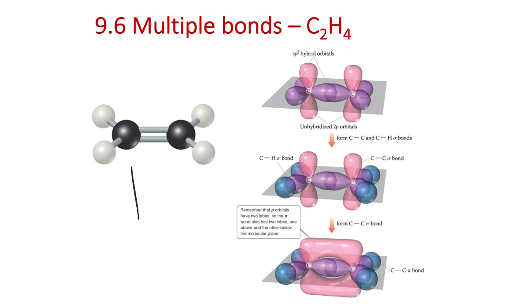Let's first think about the central atoms of CH2CH2, so C2H4. Each of these carbon atoms has three domains, so three domains would be trigonal planar.